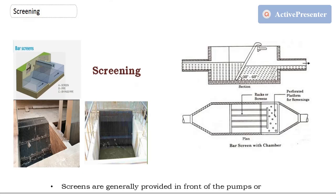Why is screening required? In this chapter we are dealing with water treatment and purification. First, water is taken from a source — studied in the second module — which may be a well, dam, river, or whatever, and is brought directly to the treatment plant. Before entering the treatment plant, the water contains large materials like stones, debris, bushes, leaves, trees, and dead animals.